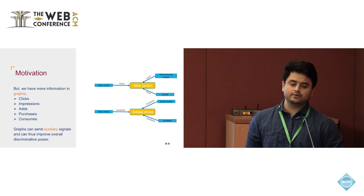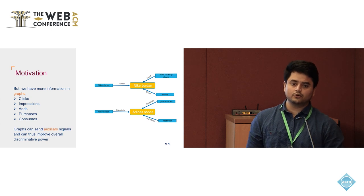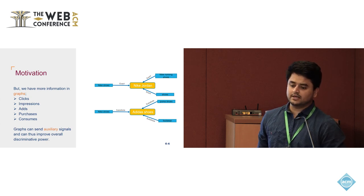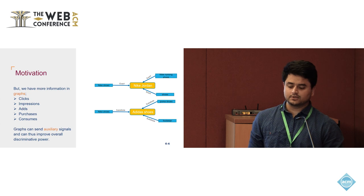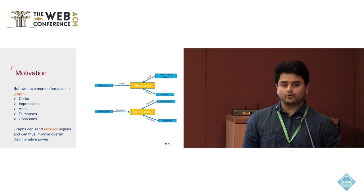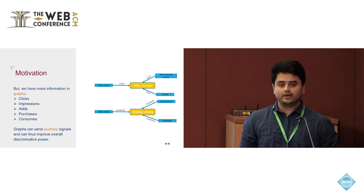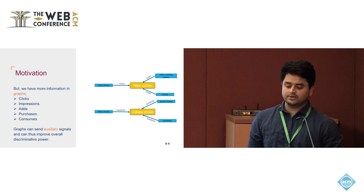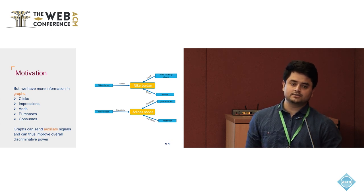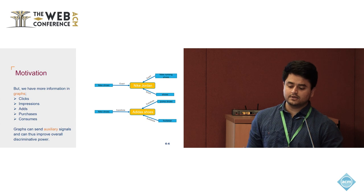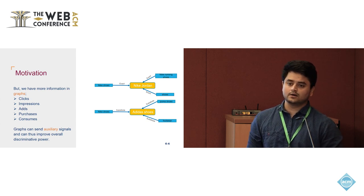What we realized, however, was that we had a lot of information in the form of a graph — user behavior data such as clicks, impressions, ads, purchases, and consumes. We wanted to figure out a way to use this information in a graph neural network setting, using them as auxiliary signals to enhance the overall discriminative power of our search relevance models.